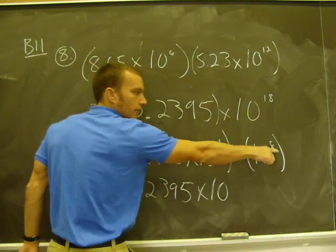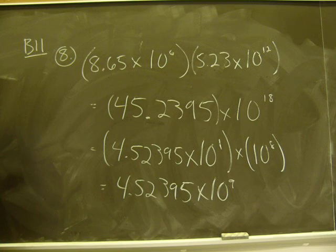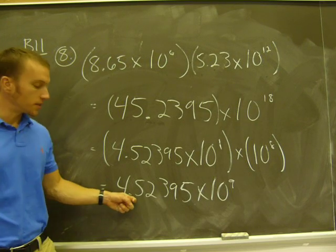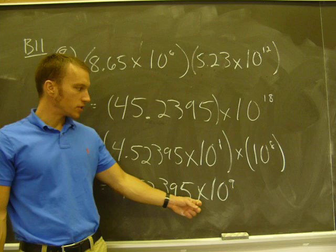So the 10 to the 1st times 10 to the 18th is 10 to the 19th. And now I'm okay, because this is in scientific notation, between 1 and 10, and my power of 10 was adjusted.